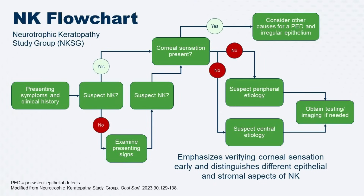You go down and you'll see there's either a peripheral etiology or central etiology, and then you're going to do more testing and try to treat these patients. Overall, you can use this flow chart — it's pretty straightforward. You do the corneal sensitivity testing, and if it comes out that they have reduced corneal sensitivity, you figure out the cause and then of course the treatment for these patients.